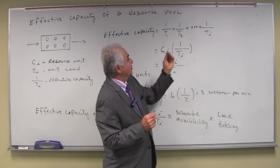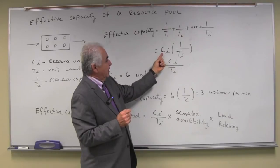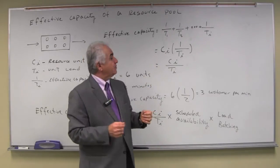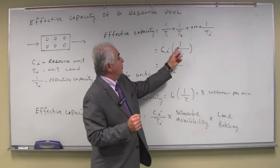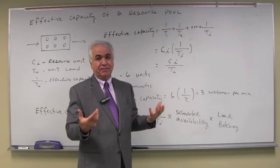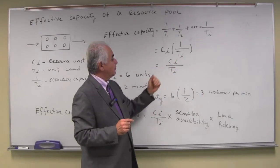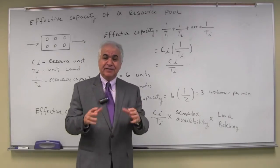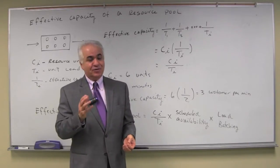So 1 over T sub 1, T sub 2, and so on. If we have C sub i, the number of resource units, times 1 over T sub i, the effective capacity of one resource unit, then C sub i over T sub i is the effective capacity of a resource pool.